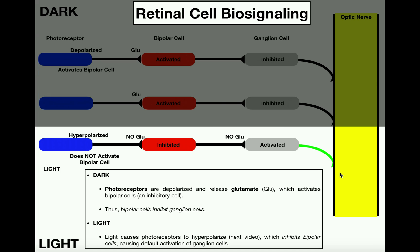A brief recap: in the dark, photoreceptor cells are depolarized and activated, which activates the bipolar cell. Since bipolar cells are inhibitory, an activated bipolar cell inhibits the ganglion cell — so no light is perceived. In the light, the photoreceptor cell is hyperpolarized and inhibited, so it does not activate the bipolar cell. The bipolar cell is inhibited, and since you're inhibiting the inhibition — a double negative — the ganglion cell is activated by default and sends signals to the optic nerve indicating light.